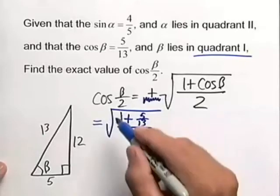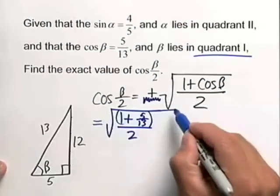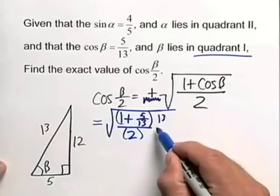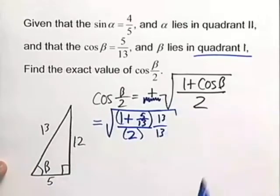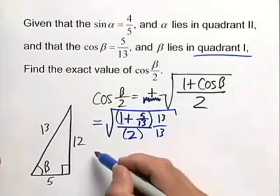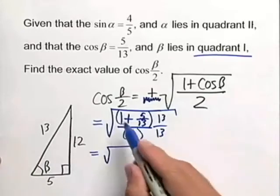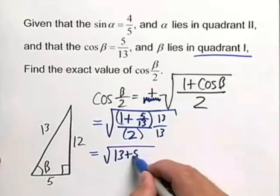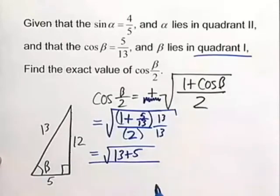Now we need to simplify. We'll multiply within the radical, top and bottom, by 13. What you do in the numerator, you have to do in the denominator, and that is inside the radical. We get √(13 + 5) on top, all over √26 in the denominator.